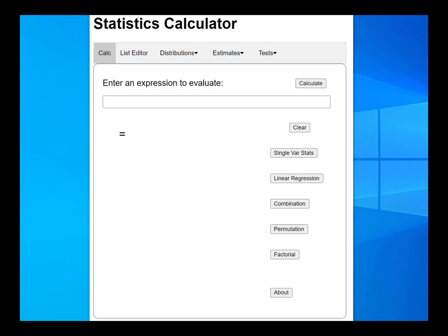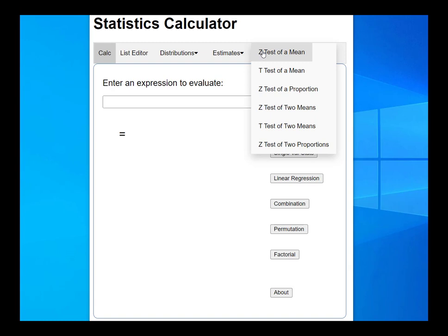In this video I'm going to show you how you can use the stats calculator to come up with a p-value for a hypothesis test which compares the mean of two different samples. Under the tests menu, if you come down to t-test of two means, that's the function that you'd want to use.